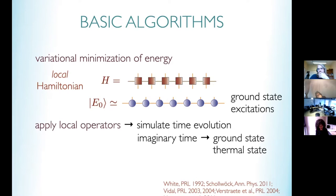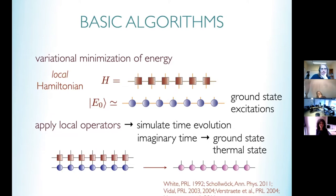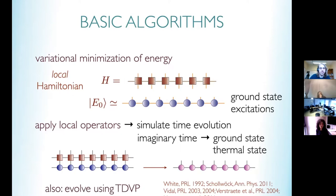The second type of algorithm is to apply local or non-local operators that have an MPO or PEPO structure onto a state and find the result within the same family. This can be used to simulate time evolution, to find ground states, to find thermal states, and to perform linear algebra algorithms. Graphically: you start with an MPS, apply an MPO, and find the approximation — with a truncation step because the bond dimension grows. You iterate this to get an approximation to the time-evolved state.